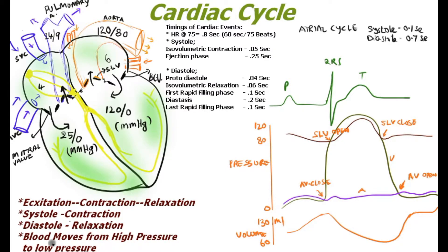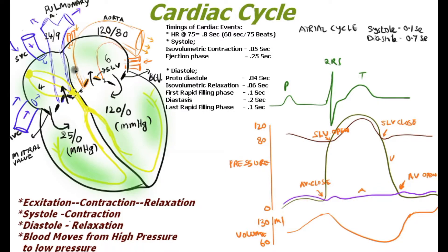Contraction is referred to as systole and relaxation as diastole. Blood always moves from high pressure to low pressure. The highest pressure in the left ventricle is 120 and the lowest is 0, whereas the right ventricle has a maximum of 25 and minimum of 0. We also note the pressure ranges in the atrium, aorta, and pulmonary artery.